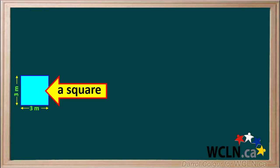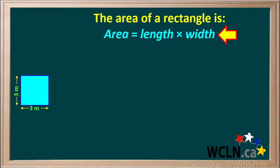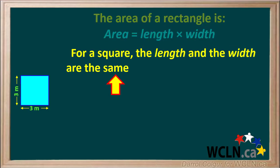Now let's see what happens if we have a square. Here's a square that is 3 meters by 3 meters. Remember, the area of a rectangle is length times width. But for a square, the length and the width are the same.